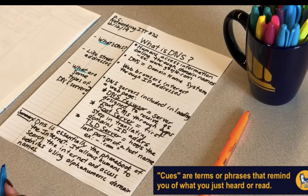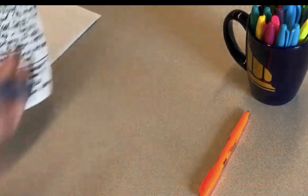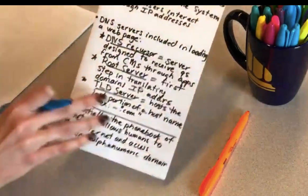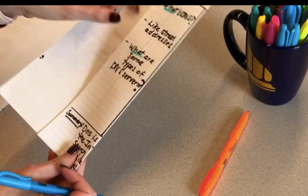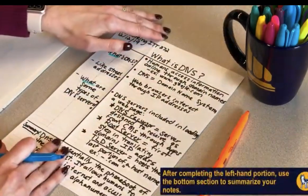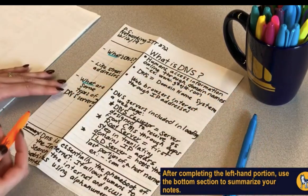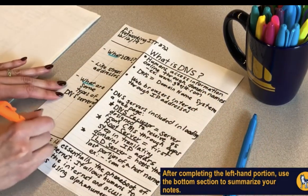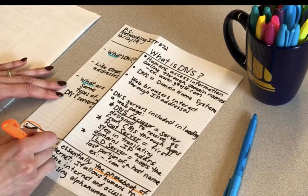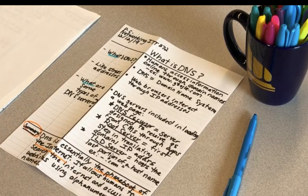When it comes time to prepare for an exam, you can use this left column as a self-test or study guide. Now it's time to summarize your notes in the bottom section of the page. You might ask yourself, how would I explain this information to someone else? Putting the gist of the material in your own words is a great way to check your comprehension. If you can summarize the page of notes, it means you're well on your way to understanding the material.